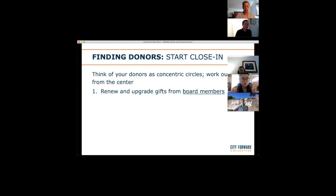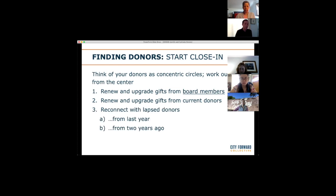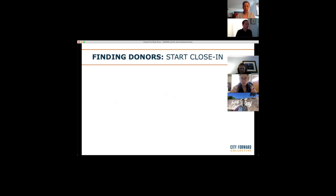Think of donors in concentric circles and work outward from the center. The people at the closest core are your board members — make sure you're focusing on them first. Sometimes we take them for granted, thinking of them as quasi-employees who have to give. They don't — and maybe they're not giving at their full capacity. Also focus on your current donors, then your lapsed donors — going back to people who gave last year but not this year. Those are folks who already showed you proof that they're invested and aligned with your mission, so it's less of a lift to re-engage them versus finding a brand new person.